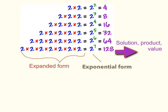You can see that exponential form has a great purpose. Rather than having to write out 2 times 2 times 2 times 2 times 2 times 2 times 2, we can just write 2 to the 7th power.